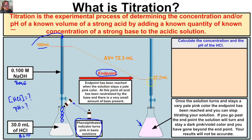We can now determine how much sodium hydroxide solution we used to titrate this acid and calculate the concentration and pH of our hydrochloric acid. First, we write a chemical reaction equation: HCl reacts with NaOH. The hydrogen from our acid bonds with the OH from our base to produce water, and the sodium from our base bonds with the chlorine from our acid to produce salt (NaCl).